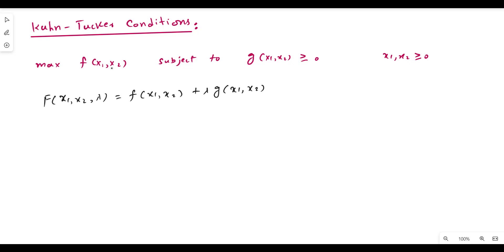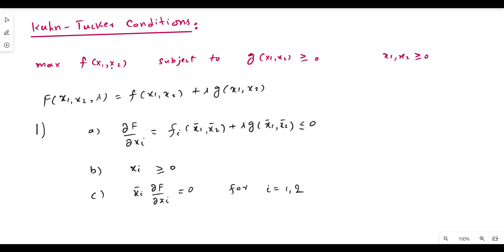Now we are presenting the necessary and sufficient conditions for maximization using the Kuhn-Tucker conditions. These are the half-conditions for maximization of the function subject to the given constraint.